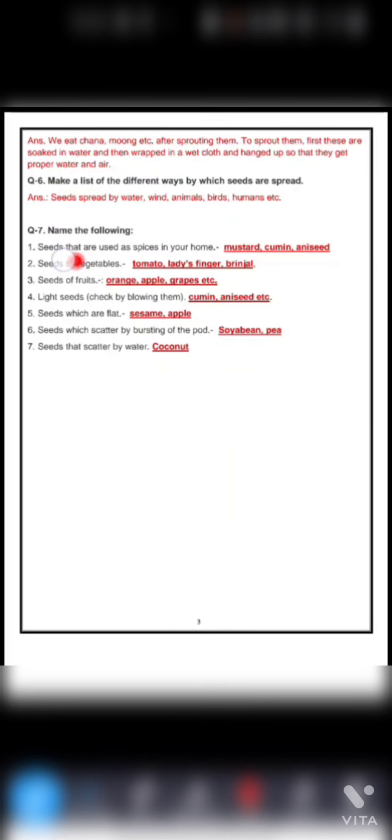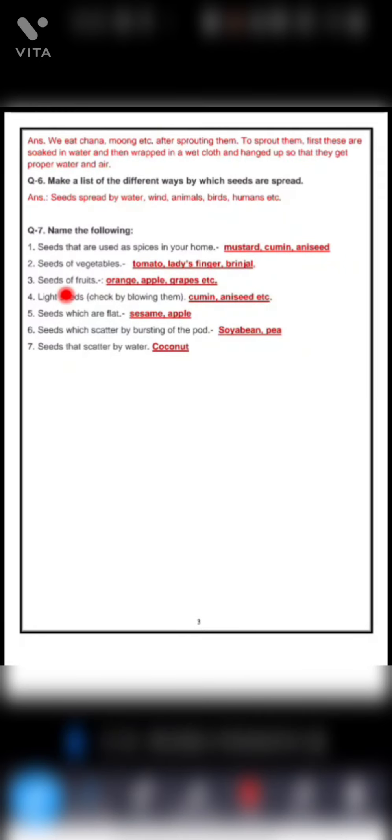Now name the following. First one, seeds that are used as spices in your home. Then seeds of vegetables, like apples, grapes, etc. Then light seeds that we can blow, like cumin, honey seeds. They are very lightweight. Then seeds which are flat, like sesame and apple. Sesame means til.